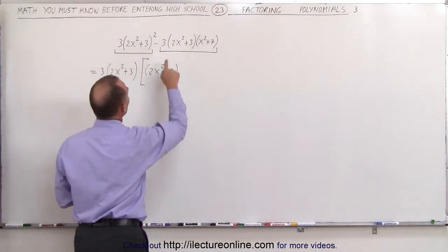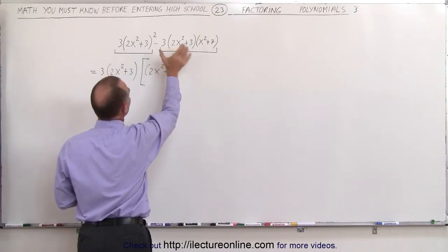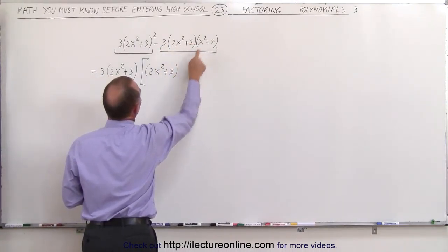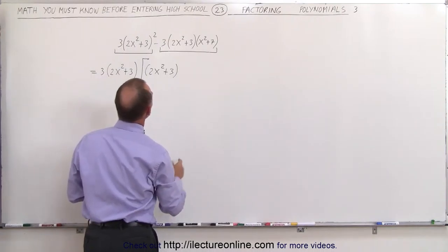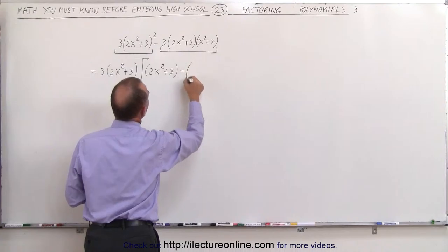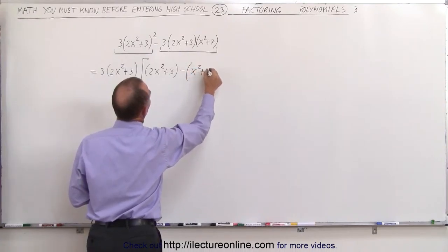From the second term, notice we factor out a 3. We factor out the 2x squared plus 3, and we're left with the quantity x squared plus 7. But don't forget there's a minus sign here, so this becomes minus the quantity x squared plus 7.